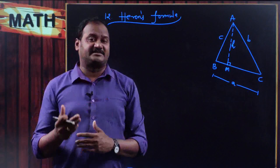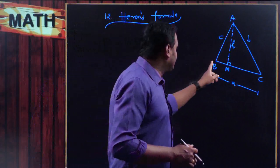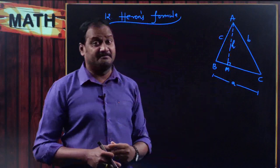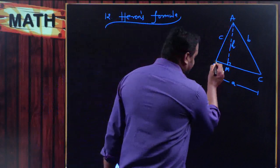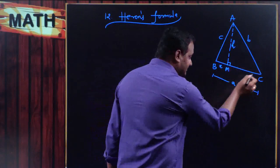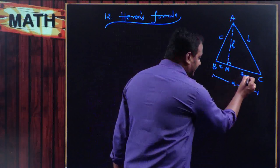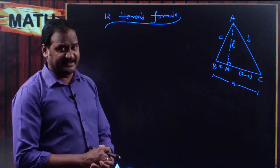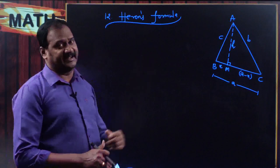Before applying Pythagoras theorem, we need to know all three sides. In triangle ABM, we know AB and AM, but we do not know BM. So let the length of BM be equal to small x. The total length of BC is small a, so the length of MC would be a minus x. Now we know all the sides of both right-angled triangles, so we can apply Pythagoras theorem to each.